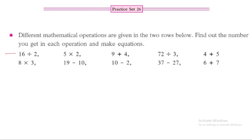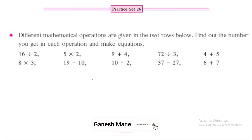There are two rows here. The question is that a particular operation is equal to 5. If the value is equal to 5, the equation is equal to 5. Suppose if we have a simple equation: 3 plus 2 is equal to 5. This is a simple equation.